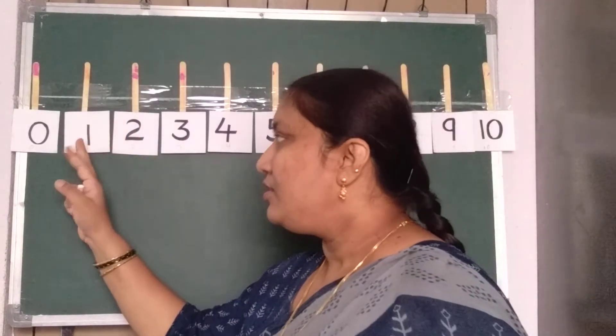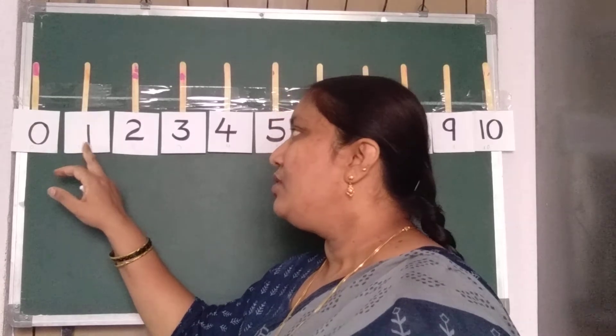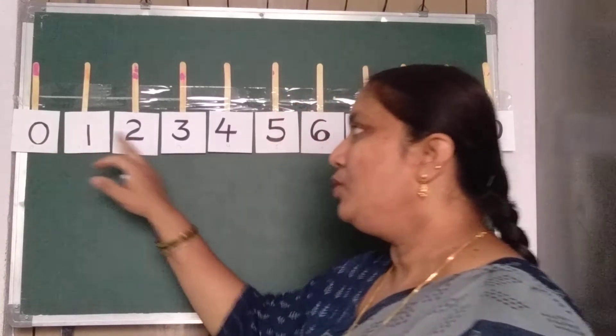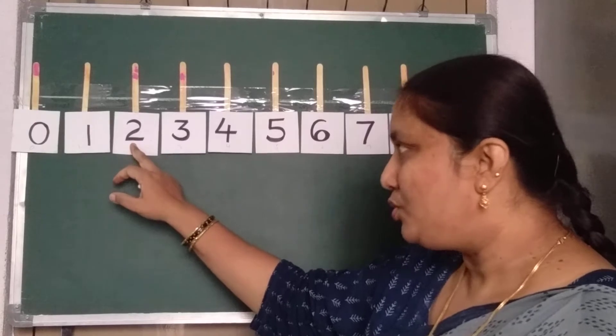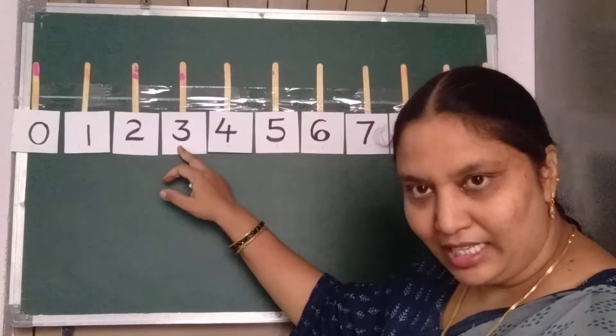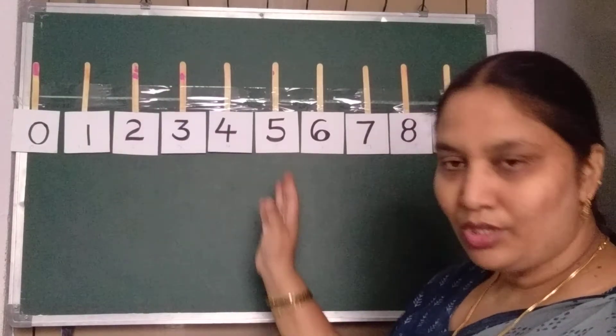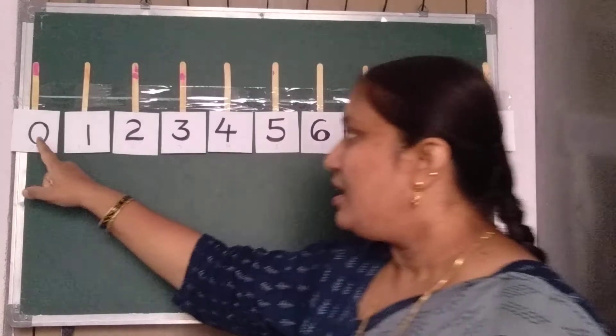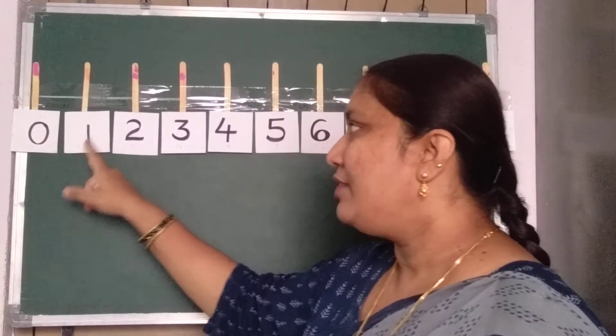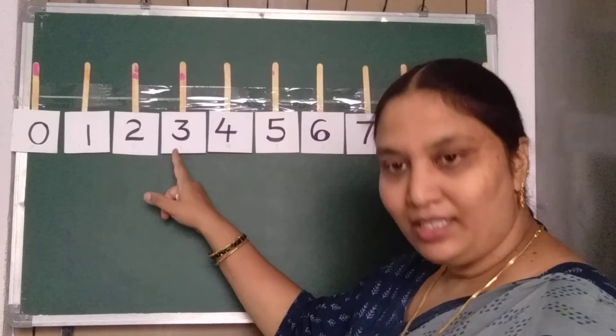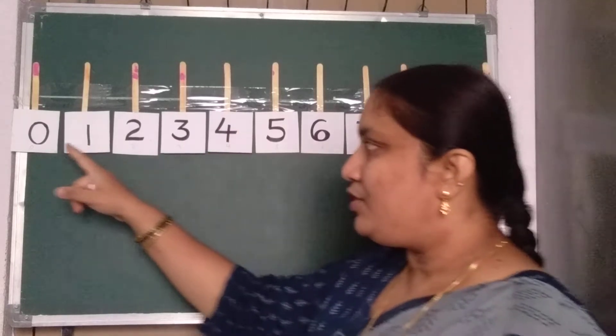See you can see easily what comes before 1, 0. Before 2, 1. Before 3, 2. Before 4, 3. And after numbers also you can learn easily. After 0, 1. 1 after 2. 2 after 3.